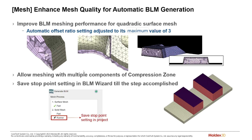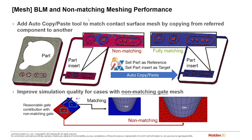The quality of the boundary layer mesh generation has been improved. Performance of quadratic surface mesh elements has been upgraded, and the offset ratio has automatically been adjusted to its maximum value of three. Inside the mesher, if you stop the mesher at a particular component, that point will be saved. Our non-matching mesher has been improved, and we have a new function to set a reference object and a target object for matching — in addition to the copy-paste tool. The non-matching gate simulation has also been improved significantly.